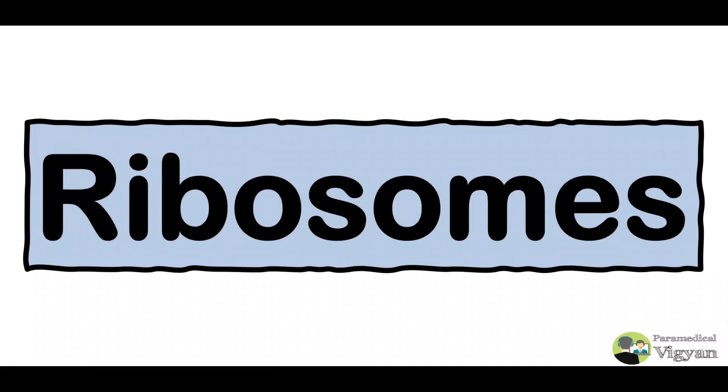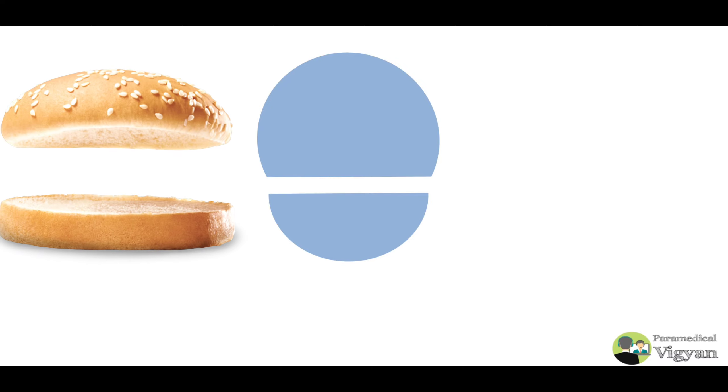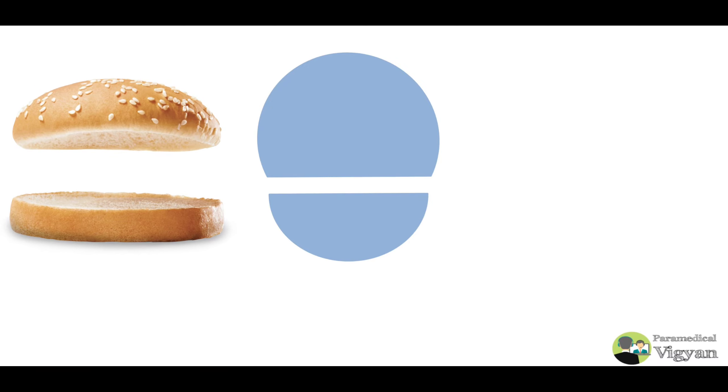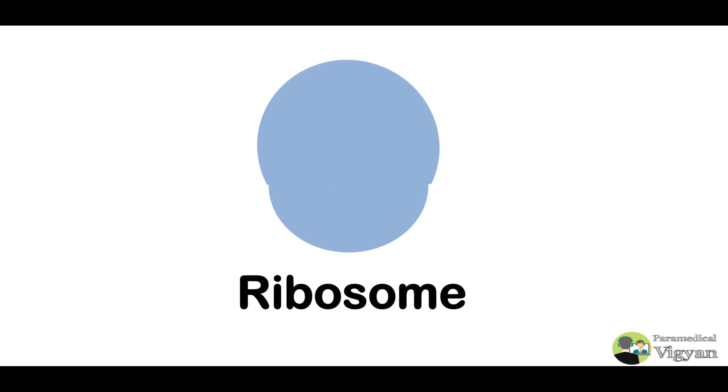So how do we do that? We will learn everything in today's lecture. This is our bun-shaped structure. Think of a burger: the top of the bun and the bottom of the bun. When you combine them, you create ribosomes.